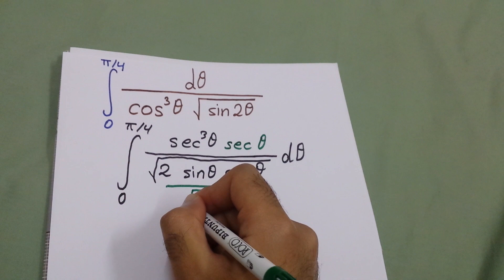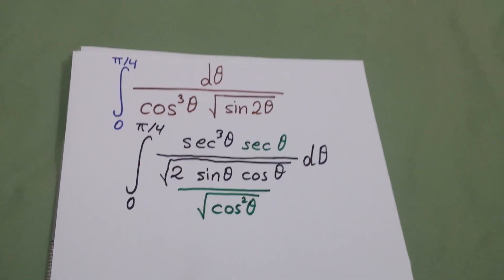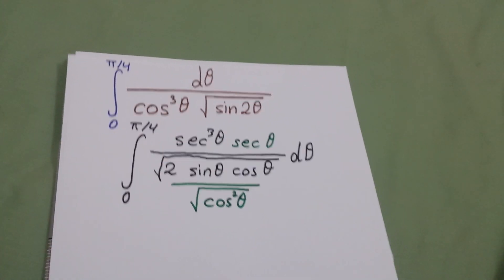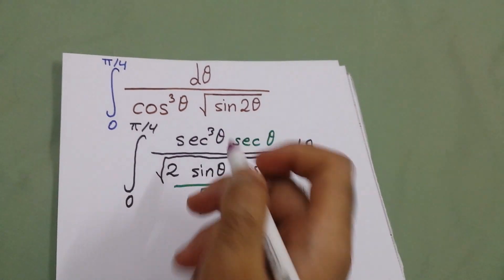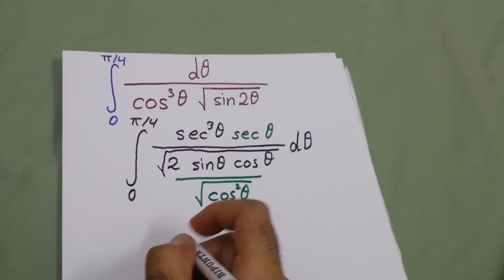Both squared. Now what we will do: secant to power 4, we will make it secant